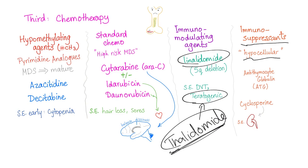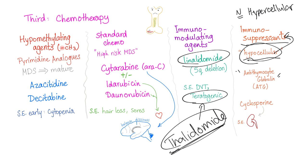Last among chemotherapy options: immunosuppressants, used for hypocellular bone marrow in the rare minority of MDS cases — since most MDS bone marrow is normal or hypercellular. In hypocellular cases, use immunosuppressants such as antithymocyte globulin (ATG) or cyclosporine. Note that cyclosporine is nephrotoxic.